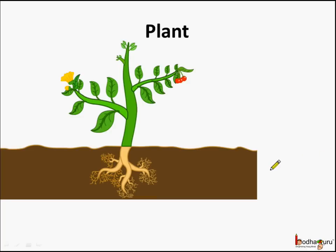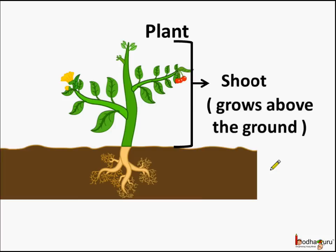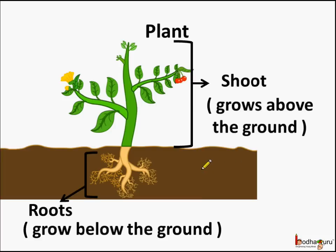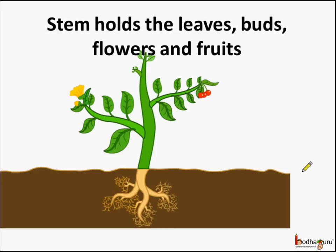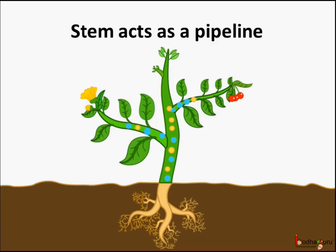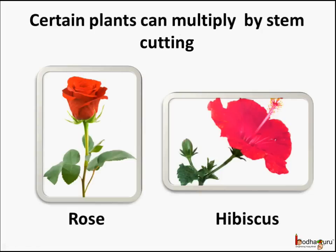First, what is the shoot system? The part of the plant which grows above the ground is called the shoot, and the part which grows below the ground is called roots. We saw the major functions of stem: the stem holds the leaves, buds, flowers and the fruits. We also saw the stem acts as a pipeline to conduct water and minerals to the other parts of the plant, and also the food prepared from the leaves to the other parts of the plants. We also saw that certain plants can multiply by stem cuttings.